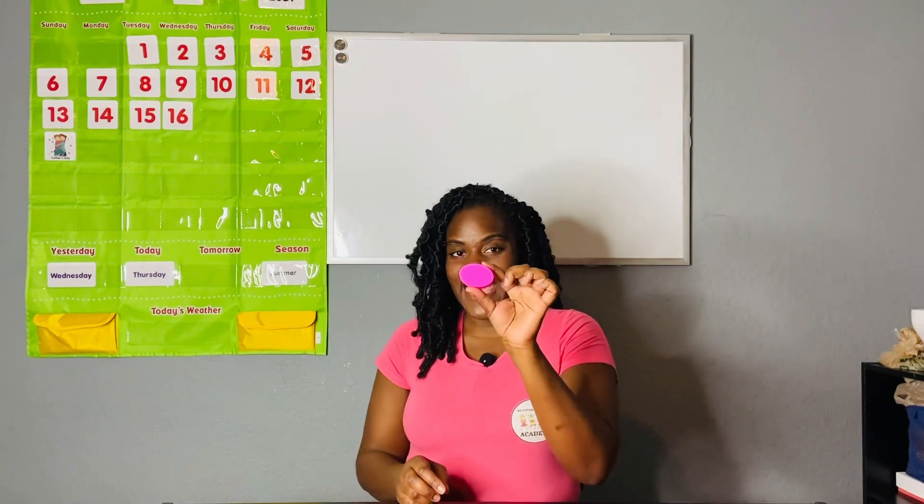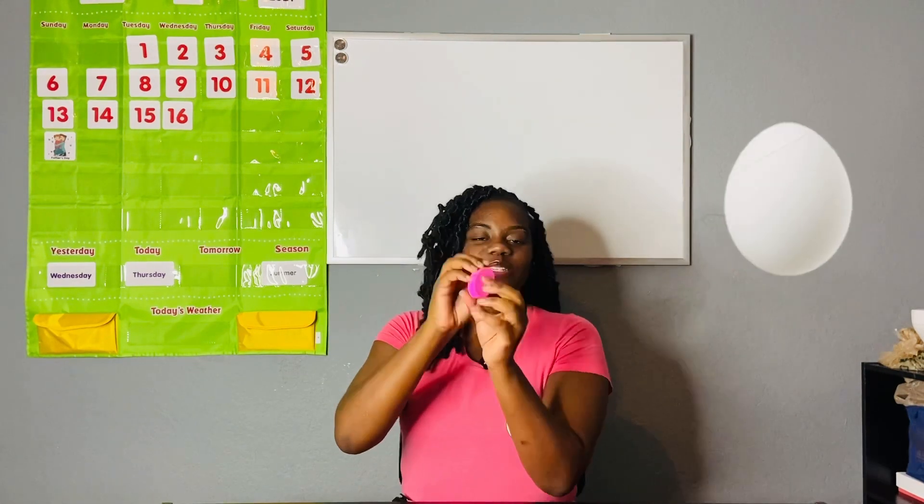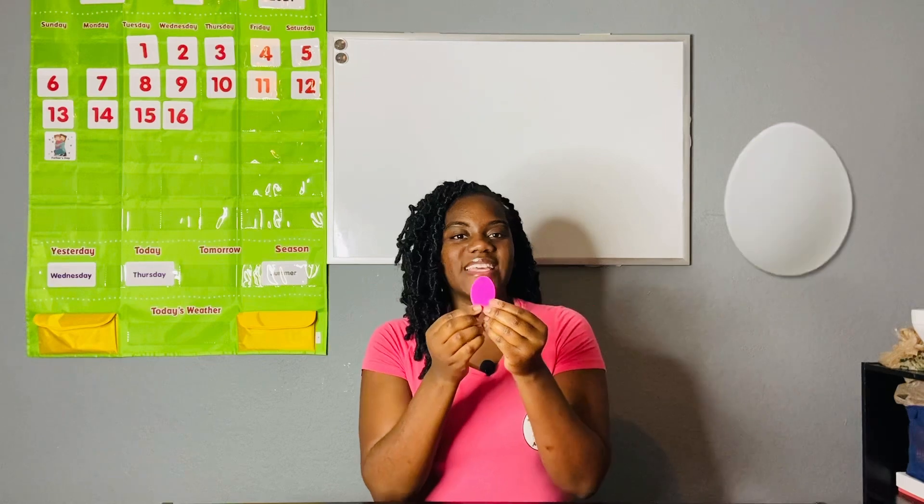Our next shape is the oval. When you think of an oval, think of an egg. The oval has zero sides and zero corners.